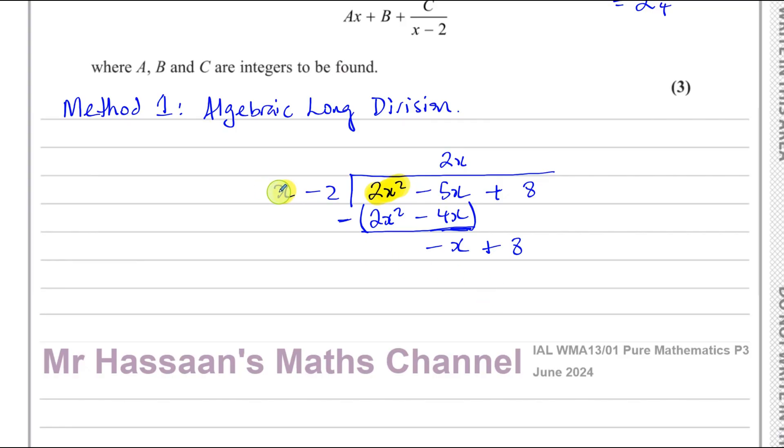Now, same procedure again. We go through the same process again. So x times something gives us minus x. Well, that's minus 1. And then minus 1 times x is minus x, and minus 1 times minus 2 is plus 2. And now we do the same thing, we subtract. This will give us 0 as well. Minus x plus x is 0, and 8 minus 2 is 6. We're left with a remainder of 6. There's nothing left to bring down. This is the remainder.